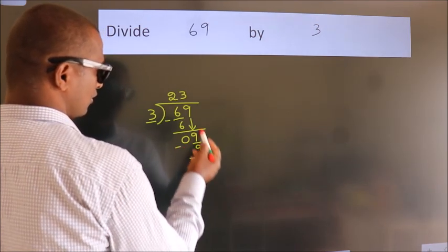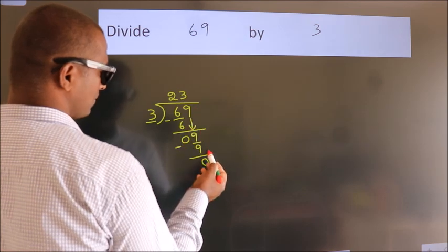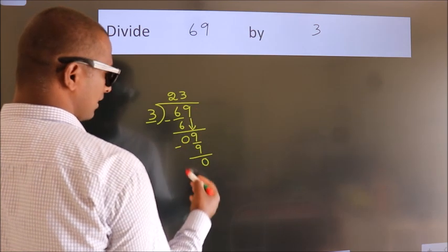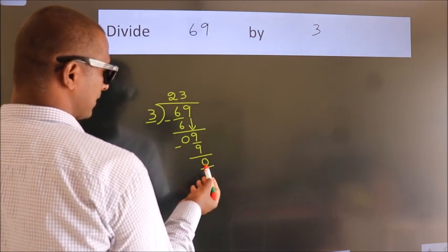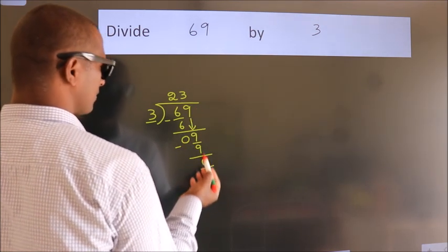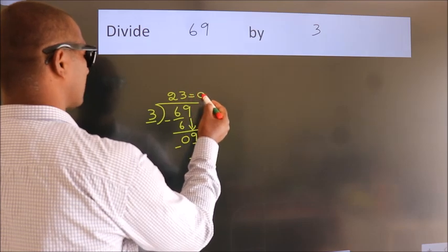After this, there are no more numbers to bring down and we got remainder 0. So, this is our quotient.